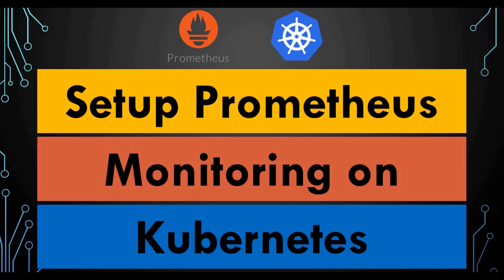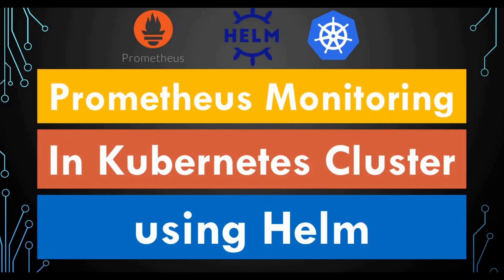Hello friends, welcome back to my channel. Today we are back with another exciting video. In this video we're going to talk about how we can set up Prometheus monitoring on Kubernetes. We have used Prometheus for different kinds of monitoring setups using Prometheus Alert Manager, Node Exporter, integrating with Grafana, and all those things. But this tutorial is a little bit more interesting because we are going to use Prometheus for monitoring Kubernetes, and we are going to use Helm.